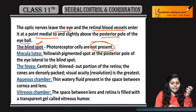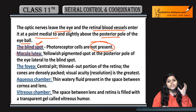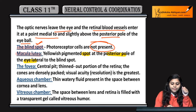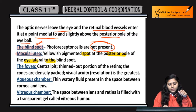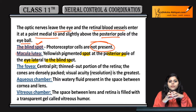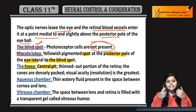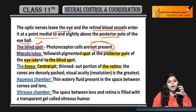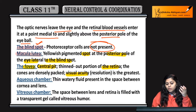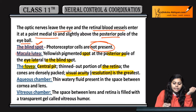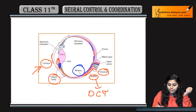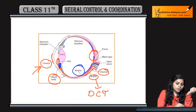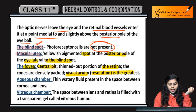Next is the macula lutea, which is a yellowish pigmented spot present at the posterior pole of the eye, lateral to the blind spot. Next is the fovea, which is a central pit — a thinned-out portion of the retina where cones are densely packed. Visual acuity, meaning resolution, is highest at the fovea region.